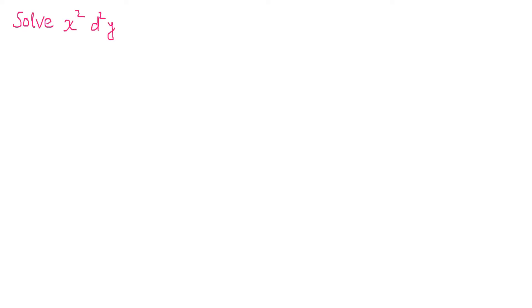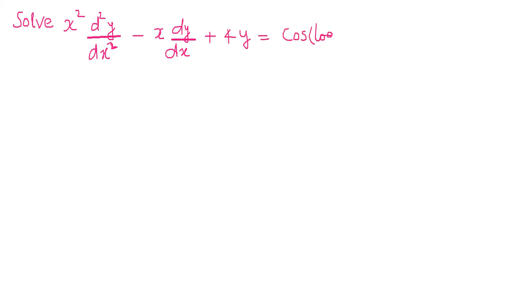Hello friends. Here we are going to learn how to solve the differential equation of Cauchy-Euler form. Here we have x squared d²y/dx² minus x dy/dx plus 4y is equal to cos(log x) plus x sin(log x).